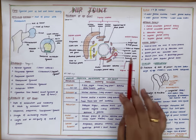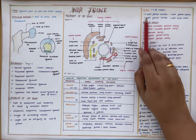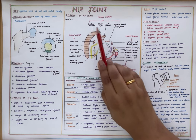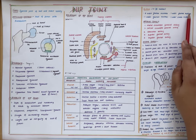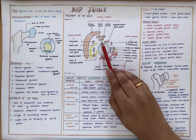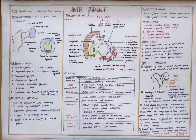Coming to the bursae around the hip joint, we have four bursae around the gluteus maximus, one under the gluteus medius, one under the gluteus minimus, and one under the psoas tendon.